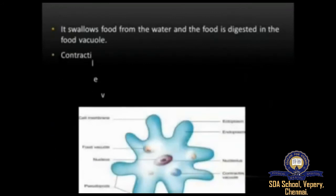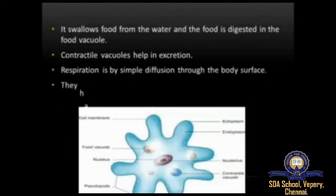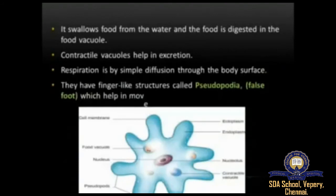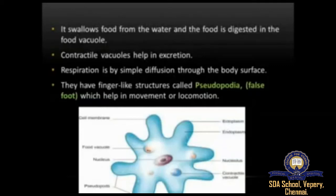From the picture you can see the food vacuole above the nucleolus. The contractile vacuoles help in excretion — the blue round structure visible in the picture is the contractile vacuole. Excretion is the elimination of waste. Amoeba excretes waste matters through the contractile vacuoles, and respiration is performed by simple diffusion through the body surface.